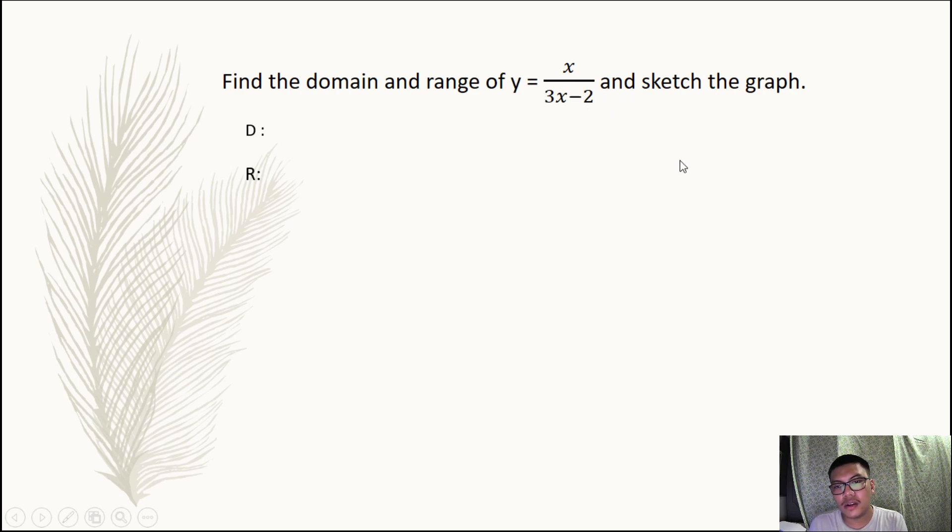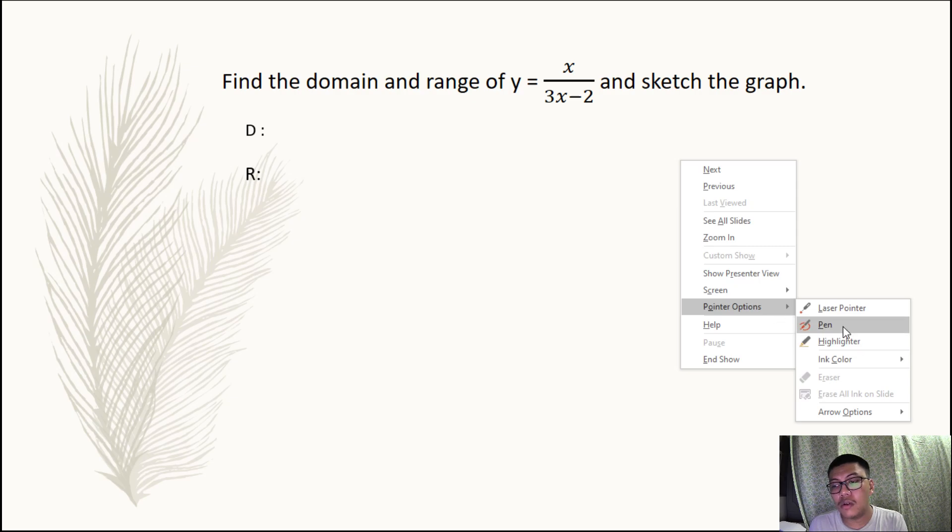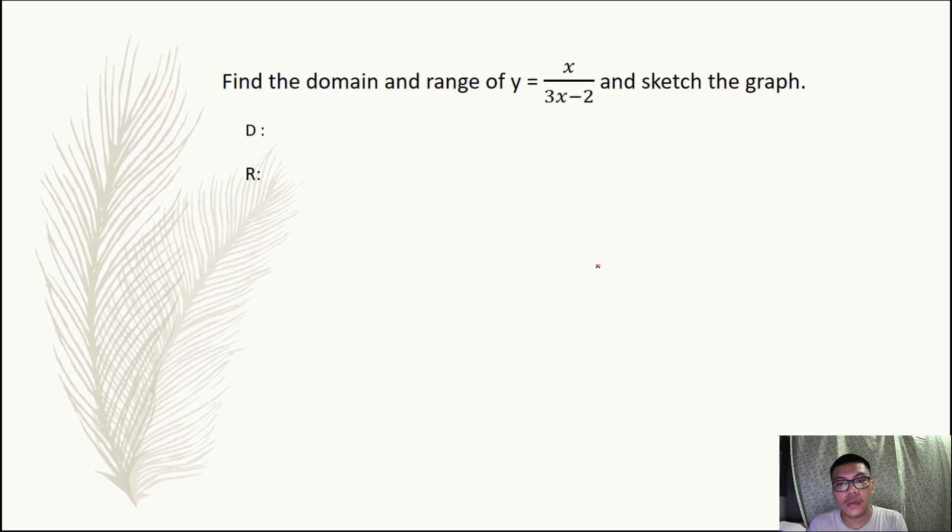Solving for the value of x here in our denominator that will give us a zero denominator. So 3x minus 2 is equal to zero, equate it to zero.